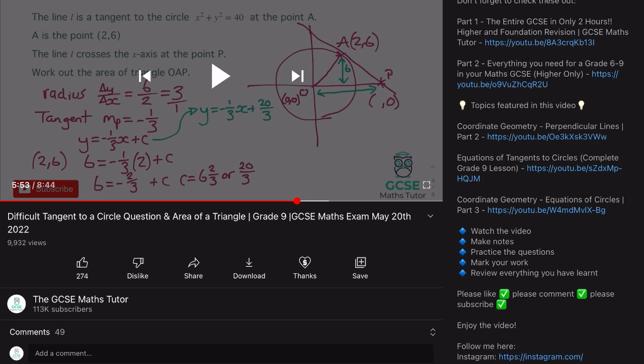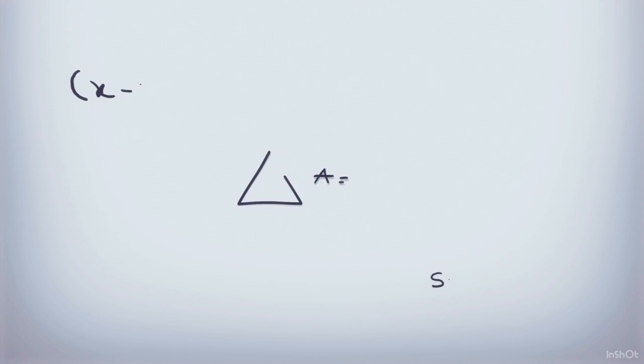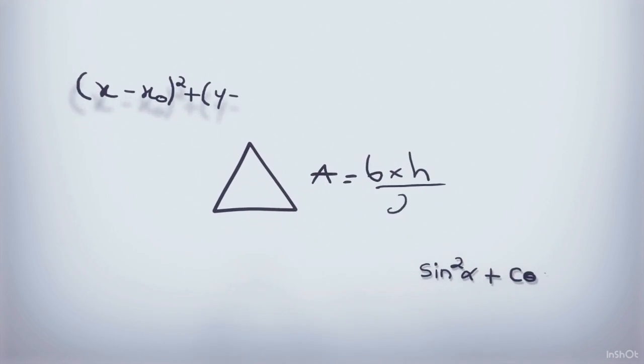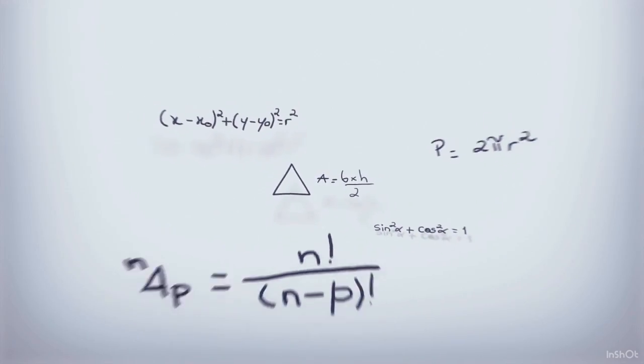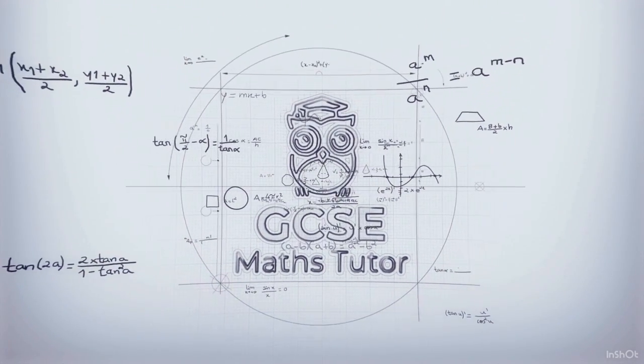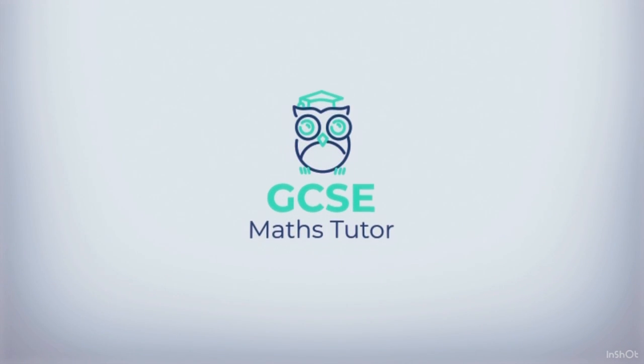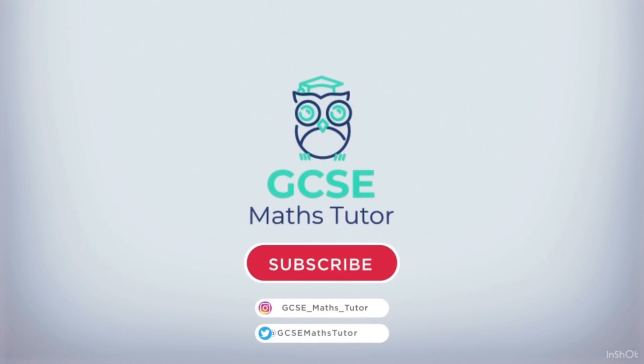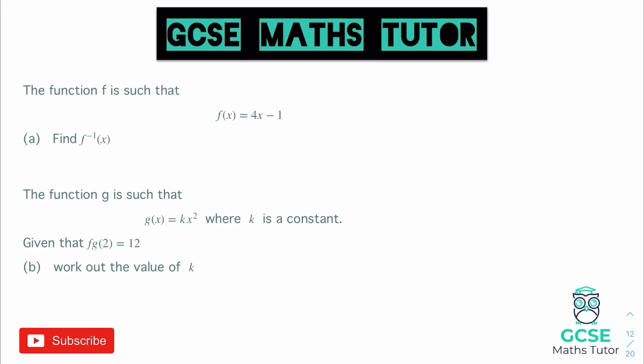So with that being said let's get started. Okay so looking at this question it says the function f is such that f(x) = 4x - 1, and for part a here it just wants us to find the inverse function of f.